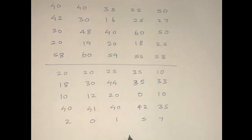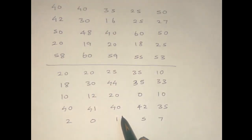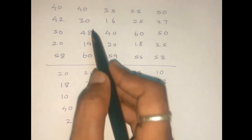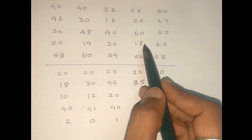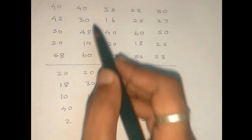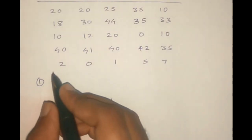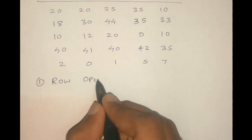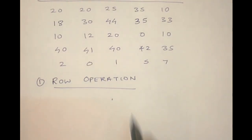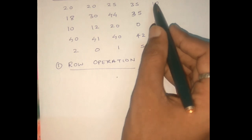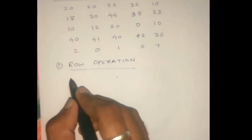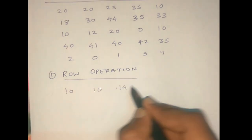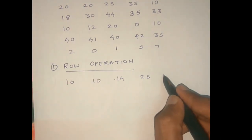Now we will see the smaller numbers. We will convert the numbers. The first step is row operation. In the row operation, we look at each row and find the least number in that row. For example, 20 or 25. We subtract it from all elements in the row. So the answer gives us 10, 10, 15, 25. Then 10 minus 10 equals 0.